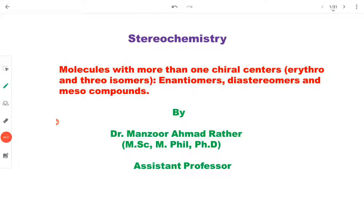Today's lecture is about molecules with more than one chiral center. We will study erythro and threo isomers, and the concepts of enantiomers, diastereomers, and meso compounds will also come into play. We have already dealt with molecules having one chiral center, and now we will elaborate that concept to molecules with more than one chiral center.